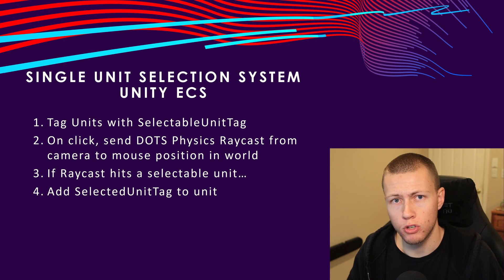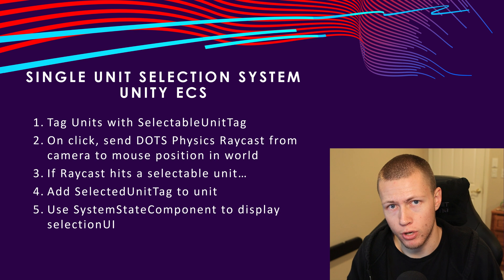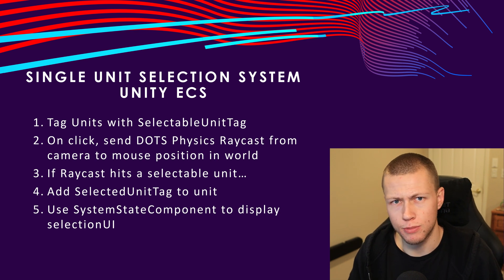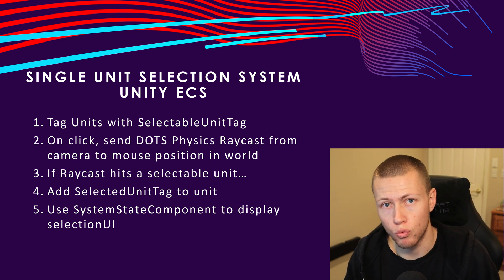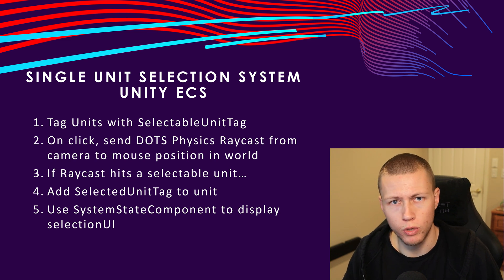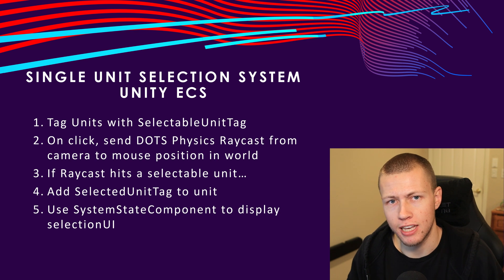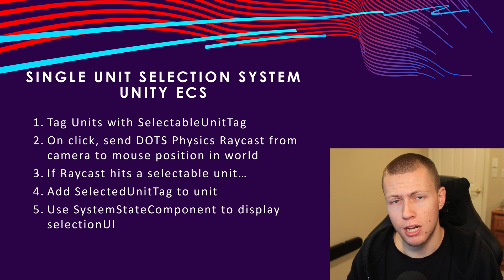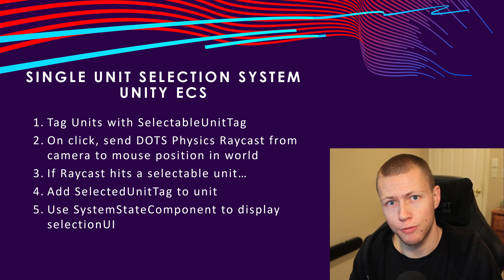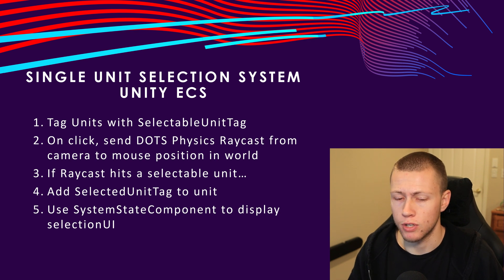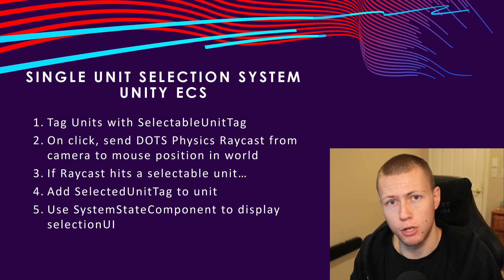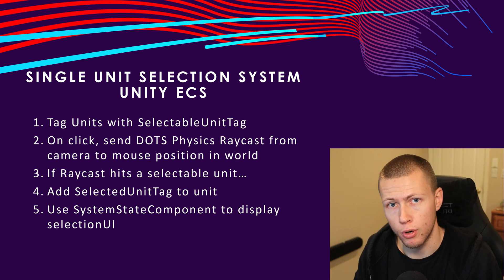With that selected tag, we can query for it in future systems if we need to. In this particular case, we're also going to be using something known as a system state component. The system state component is basically going to spawn a selection ring into the world, so we can have a visual indication that that particular entity has been selected. I'm not going to go too deep into how the system state component is set up because I did a full in-depth video on those — I will leave a link up in the card as well as in the description.